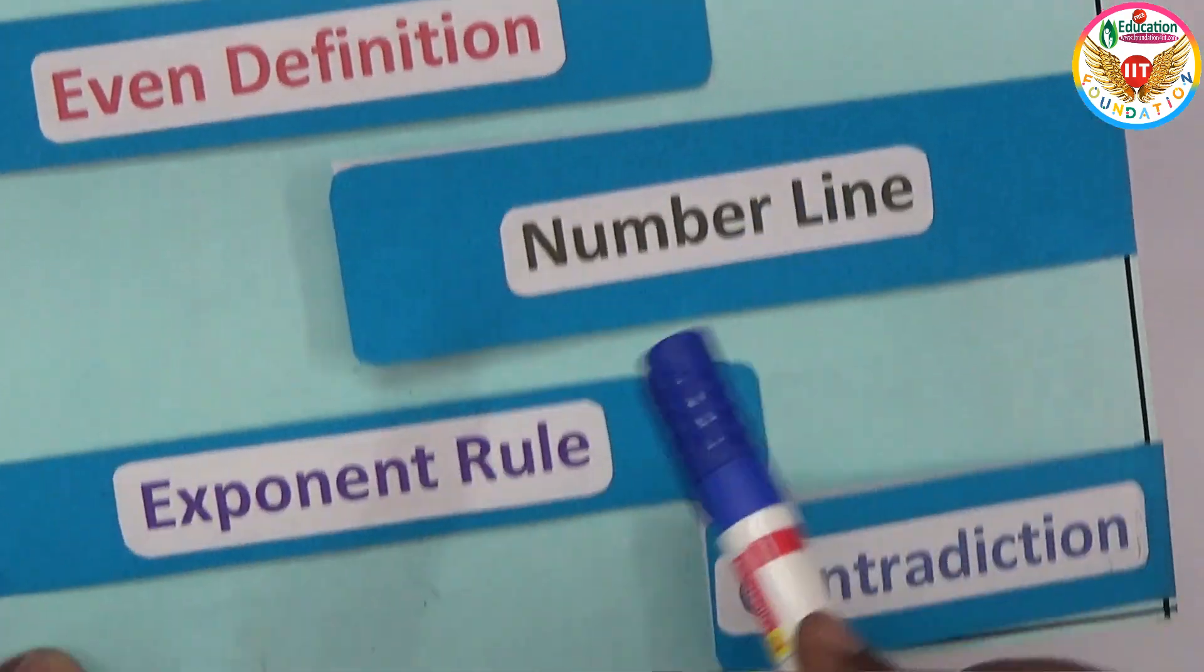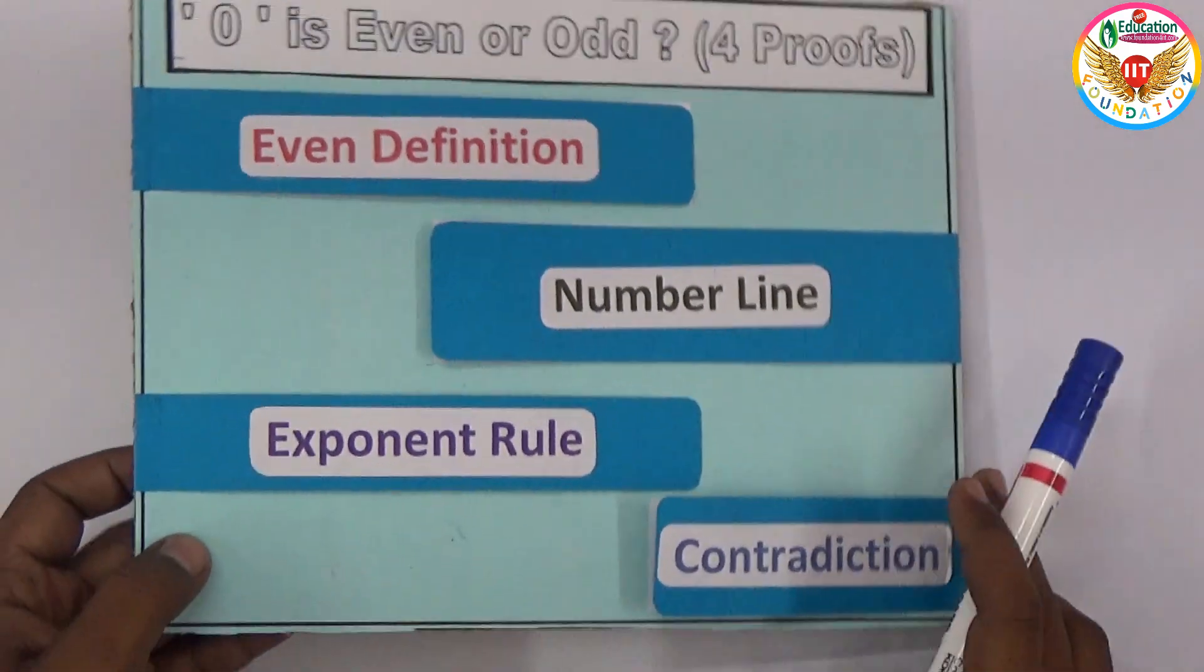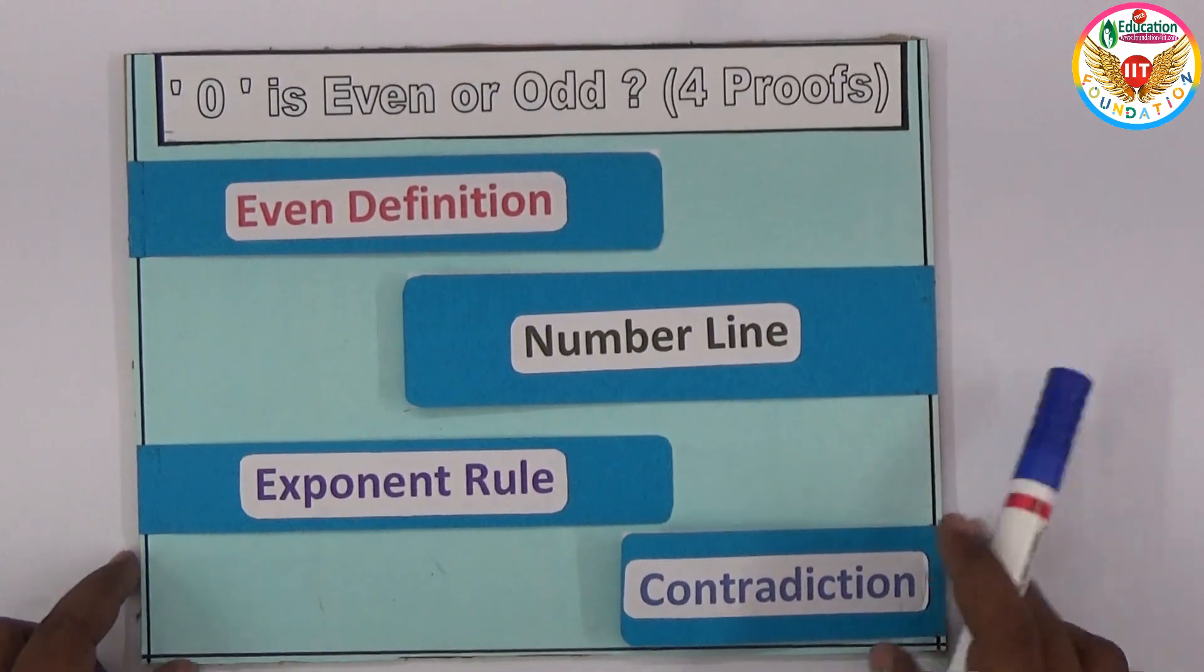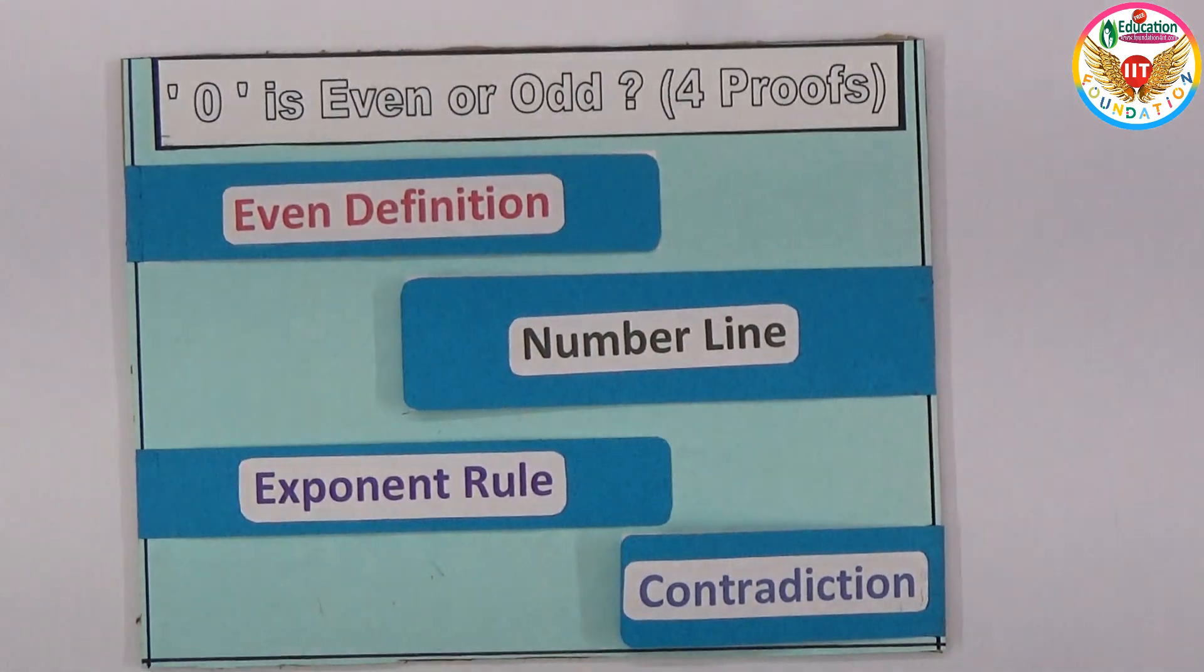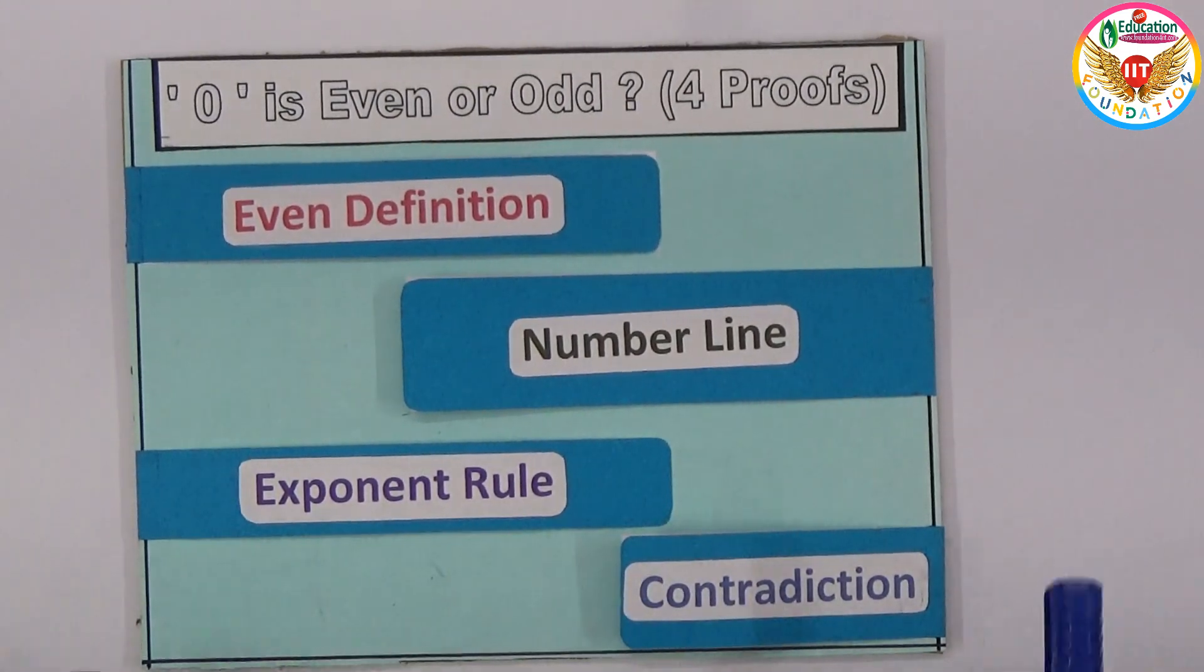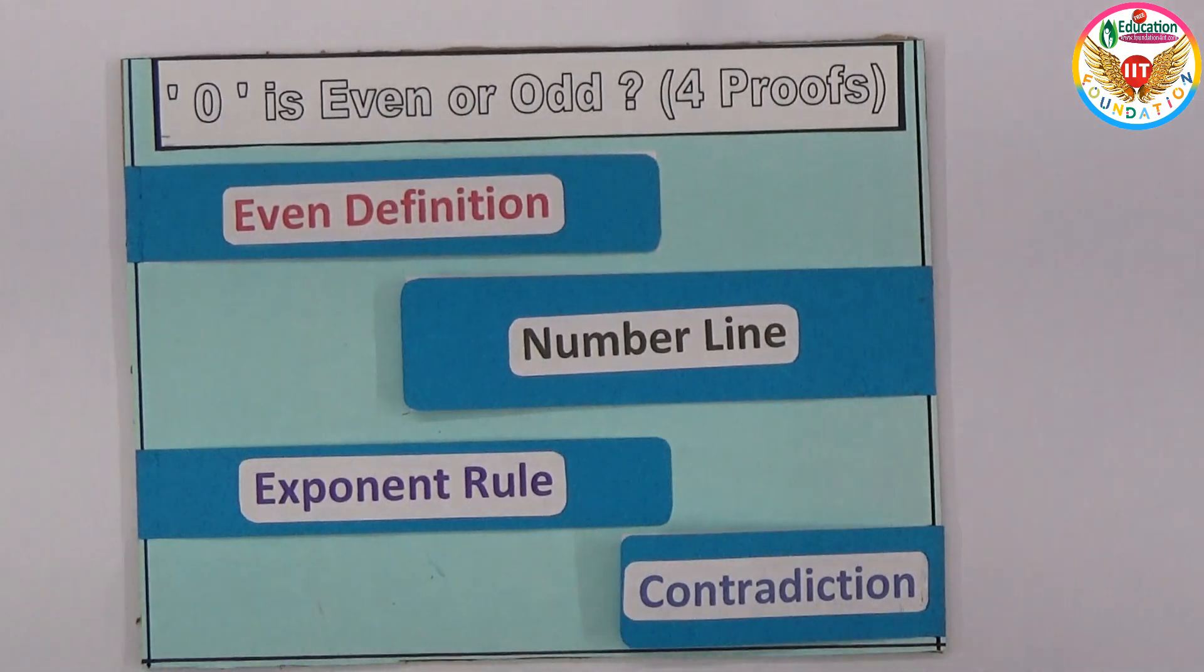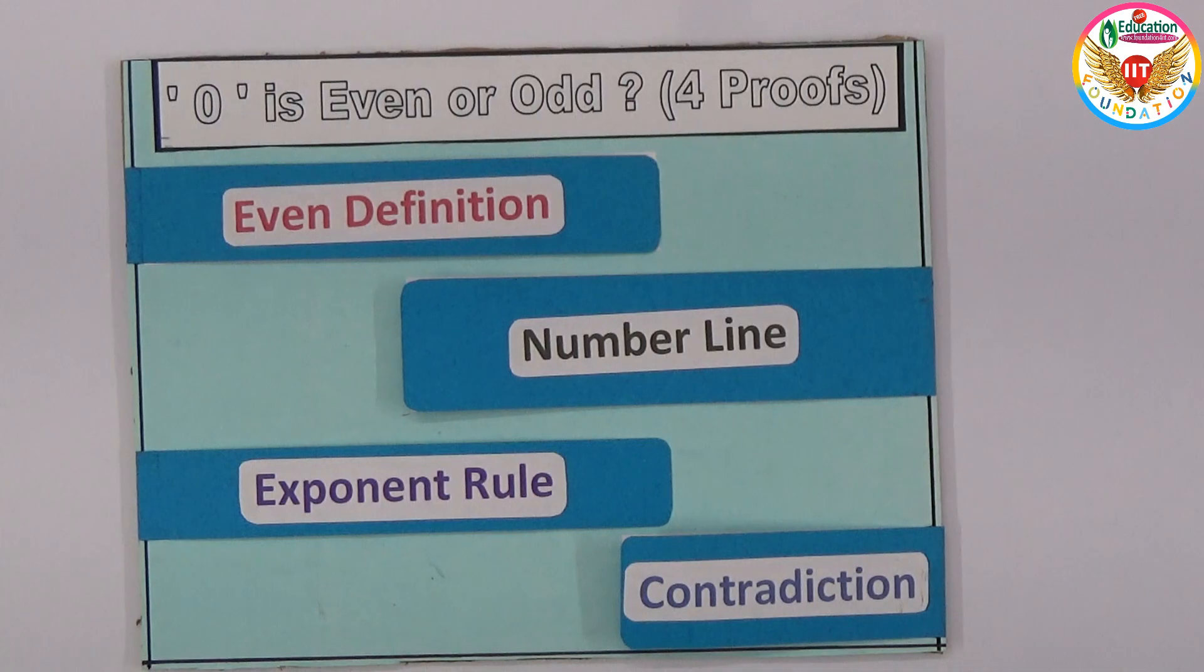These are the even definition, number line, exponent rule, and contradiction. Using these four methods, I will prove that zero is exactly an even number. Instead of giving confusion about zero being either even or odd, I'll show it's an even number only. Let's take one by one.